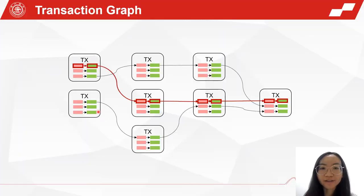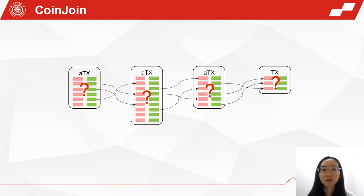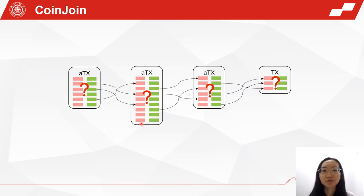In Bitcoin, an attacker can de-anonymize transactions by clustering and analyzing the transaction graph. To prevent the transaction graph from being reviewed, there is an approach called coin join to break the linkability. The core idea of coin join is to aggregate transactions in the same time period.